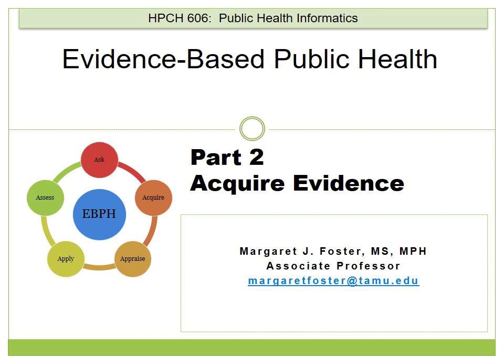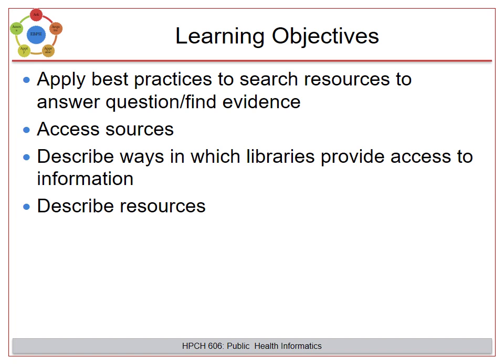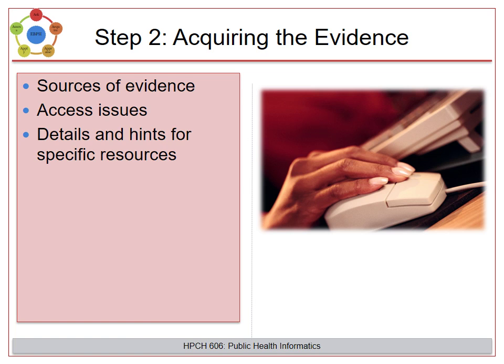This lecture focuses on Step 2 of evidence-based public health practice: Acquire the Evidence. The learning objectives include applying best practices for searching resources, how to access those resources, and describing hints for searching them. Once you have your question in an answerable form formatted into the PICO format, you'll use those terms to search for the evidence. We'll discuss the best places to search and how to access those resources.